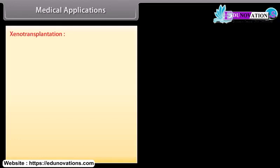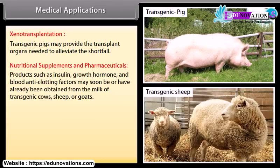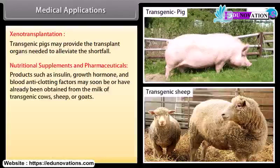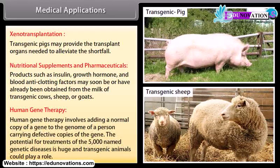Medical Applications — Xenotransplantation: Transgenic pigs may provide the transplant organs needed to alleviate the shortfall. Nutritional Supplements and Pharmaceuticals: Products such as insulin, growth hormone, and blood anti-clotting factors may soon be or have already been obtained from the milk of transgenic cows, sheep or goats. Human Gene Therapy involves adding a normal copy of a gene to the genome of a person carrying defective copies. The potential for treatment of the 5,000 named genetic diseases is huge and transgenic animals could play a role.